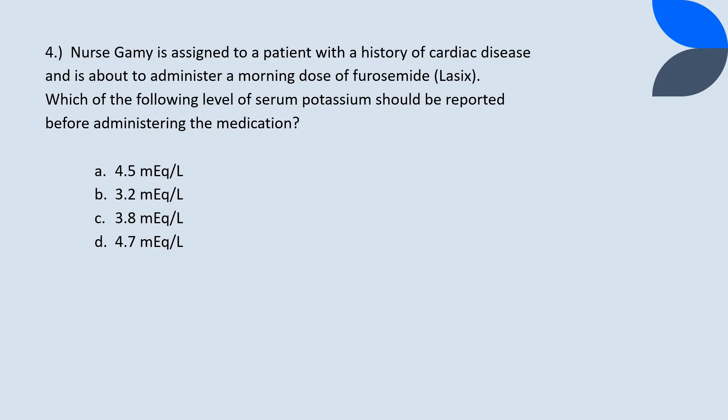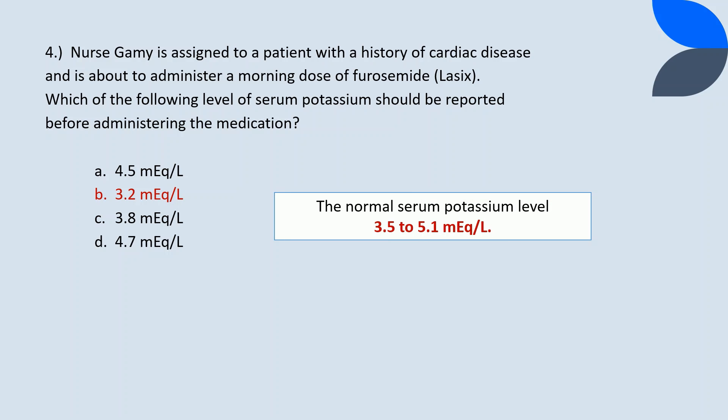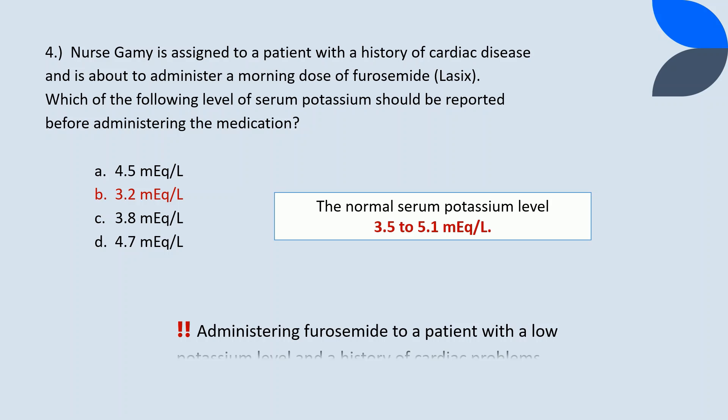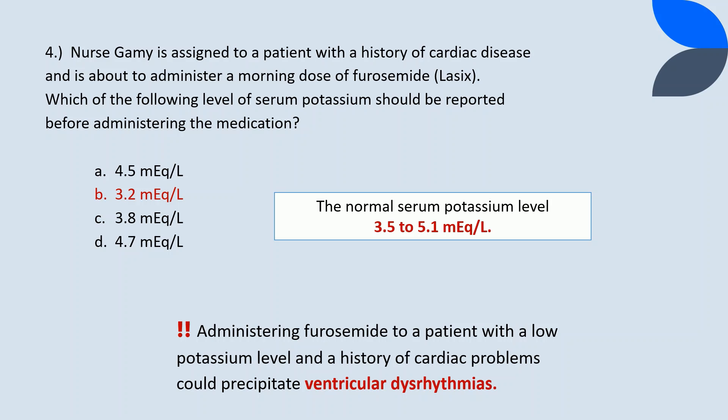Question 4. Nurse Gami is assigned to a patient with a history of cardiac disease and is about to administer a morning dose of furosemide. Which of the following levels of serum potassium should be reported before administering the medication? The correct answer is B, 3.2 mEq per liter. The normal serum potassium level in the adult is 3.5 to 5.1 mEq per liter. Letter B is the only value that falls below the therapeutic range. Administering furosemide to a patient with a low potassium level and a history of cardiac problems could precipitate ventricular dysrhythmia.